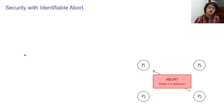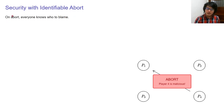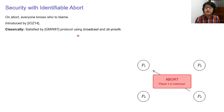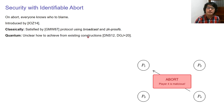It turns out the answer is yes, because there's this other security notion called security with identifiable abort. Roughly, it means that when the protocol aborts, everyone at least knows who to blame — everyone knows who is causing the abort. This notion was introduced by Ishai, Ostrovsky, and Zikas. Classically, it was satisfied by the GMW protocol, whose high-level idea is to use broadcast and zero-knowledge proofs so honest parties can prove they did what they were supposed to do. But in the quantum setting, we cannot broadcast a quantum state due to the no-cloning theorem, so it is unclear how to achieve identifiable abort from existing constructions.